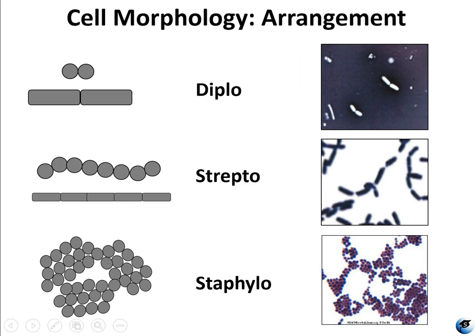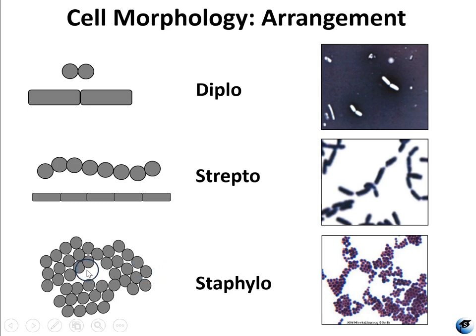Strepto means a chain — most of them are not individual and not just in pairs, but in chains of three or more. That is strepto. Staphylo can be tricky because when making a smear the cells can look clumped together just because of where they landed on the slide. For a true staphylo arrangement you need grape-like clusters all on the same plane — clustered next to each other, not stacked on top of each other.